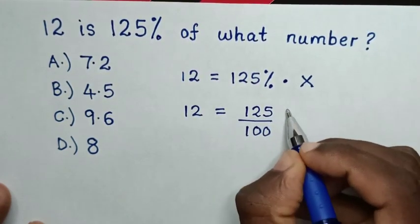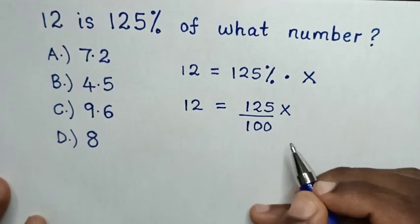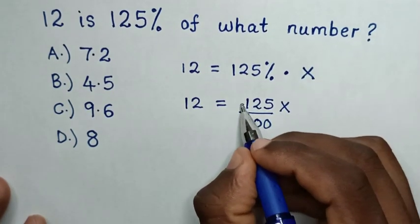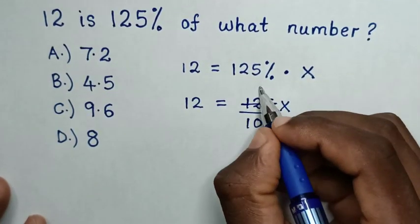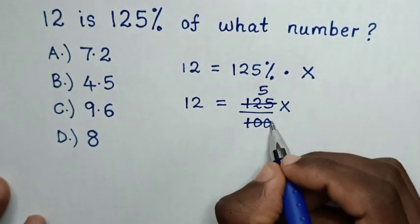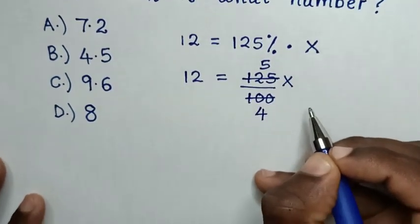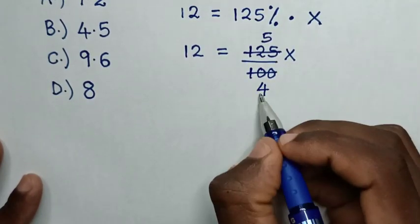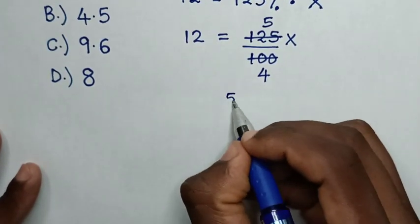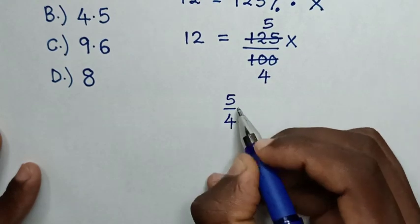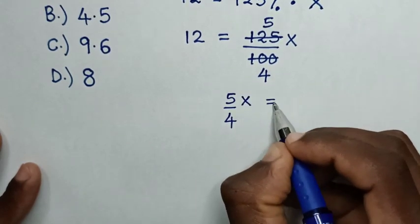Then, to simplify, 125 divided by 25 is 5, and 100 divided by 25 is 4. Then, it will be 5 over 4 times x is equal to 12.